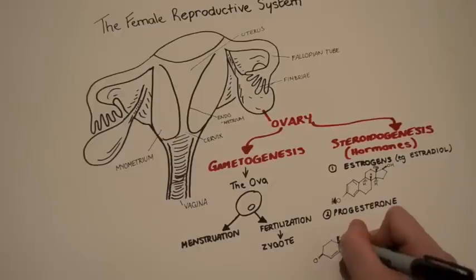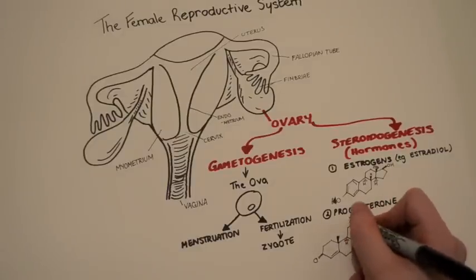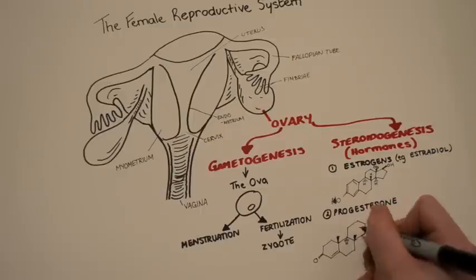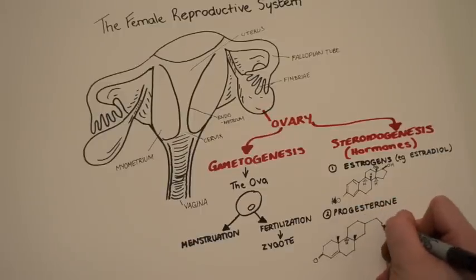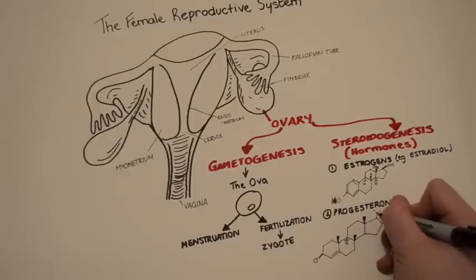Progesterone is secreted from the corpus luteum, a steroidogenic mass left after the secretion of the ovum from the ovary into the fallopian tube. Progesterone is responsible for maintaining the uterine wall during pregnancy. It's also involved in stimulating lactation in the mammary glands.